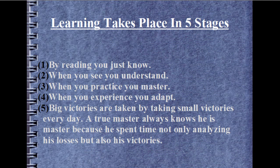Before we close this video, just a few more pointers. As a kid I loved Batman. While training Robin, Batman tells Robin 5 things about learning that apply to absolutely every learning experience. Learning takes place in 5 stages: 1. By reading you just know. 2. When you see, you understand. 3. When you practice, you master. 4. When you experience, you adapt. 5. Big victories are taken by taking small victories every day. A true master always knows he is a master because he spent time not only analyzing his losses but also his victories.